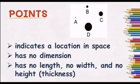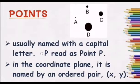The first undefined term is a point. A point indicates a location in space. It has no dimension. It has no length, no width, and no height or thickness. A point is usually named with a capital letter. The following example is read as point B. In the coordinate plane, it is named by an ordered pair, XY.